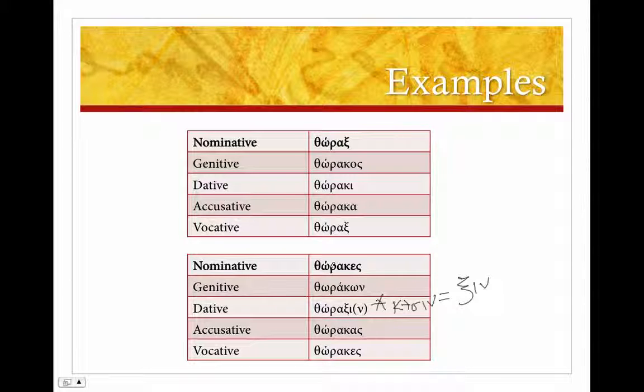And here we've got our stem, our kappa plus sin equals x, so that's why that spelling has shifted. Thorakes, thorakon, thoraxin, thorakas. That's a masculine or feminine stems that end in kappa are going to do this, this is what they will look like.